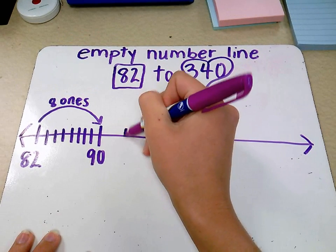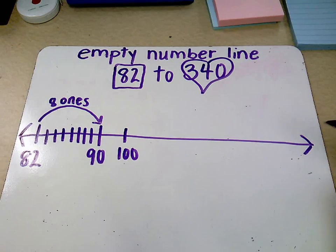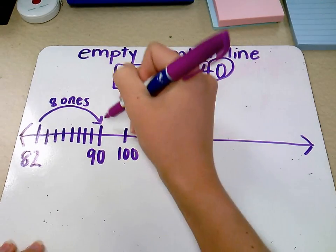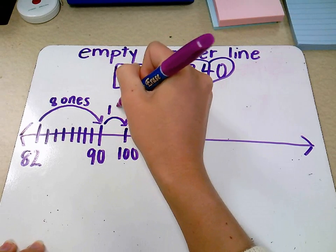90, 10 more would be 100. And look, now we're at another benchmark number, another 10. What did we do? Let's label it. We added 1 ten.